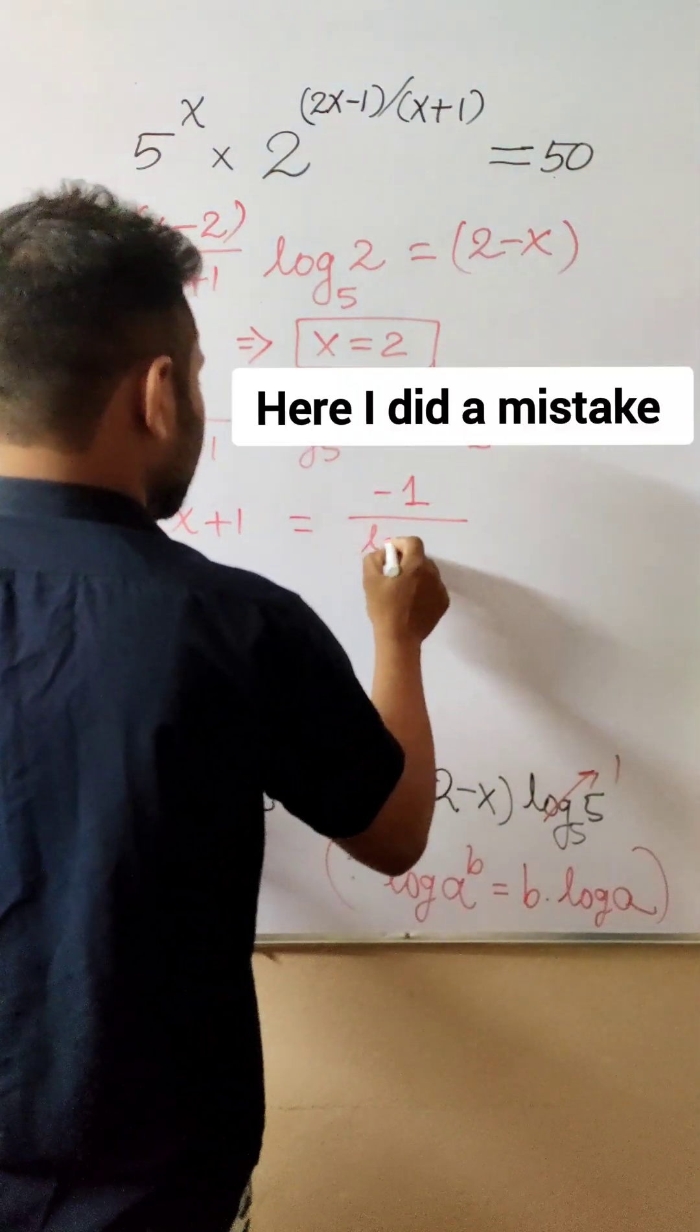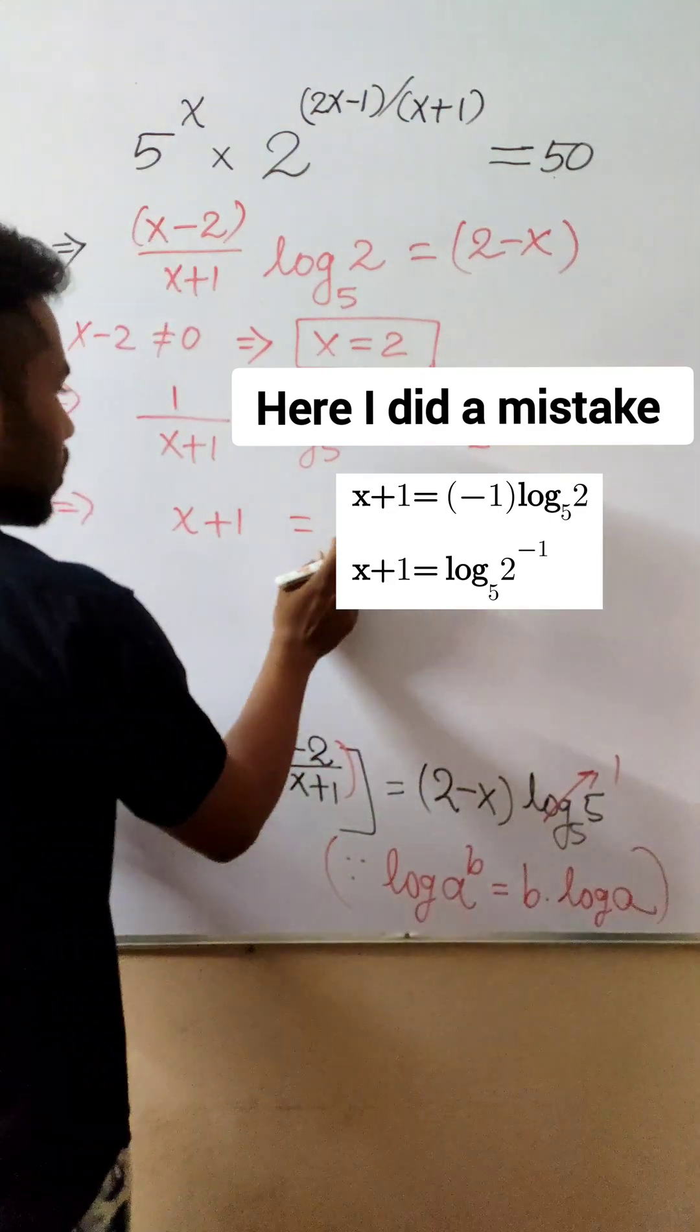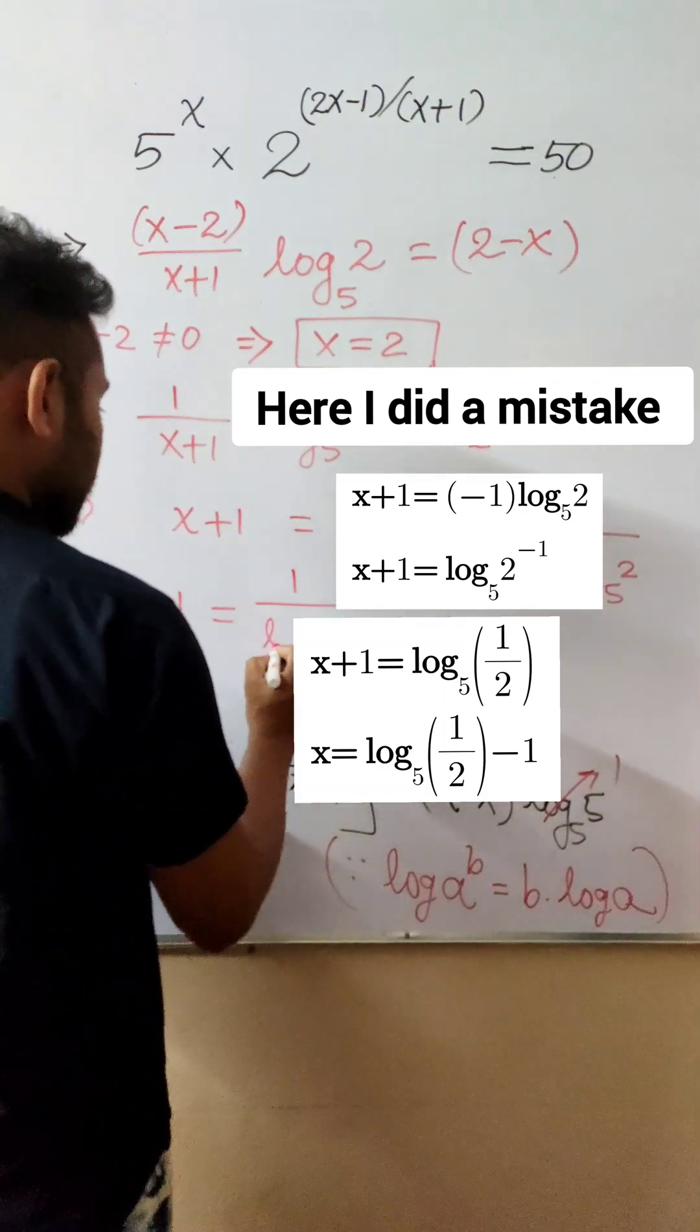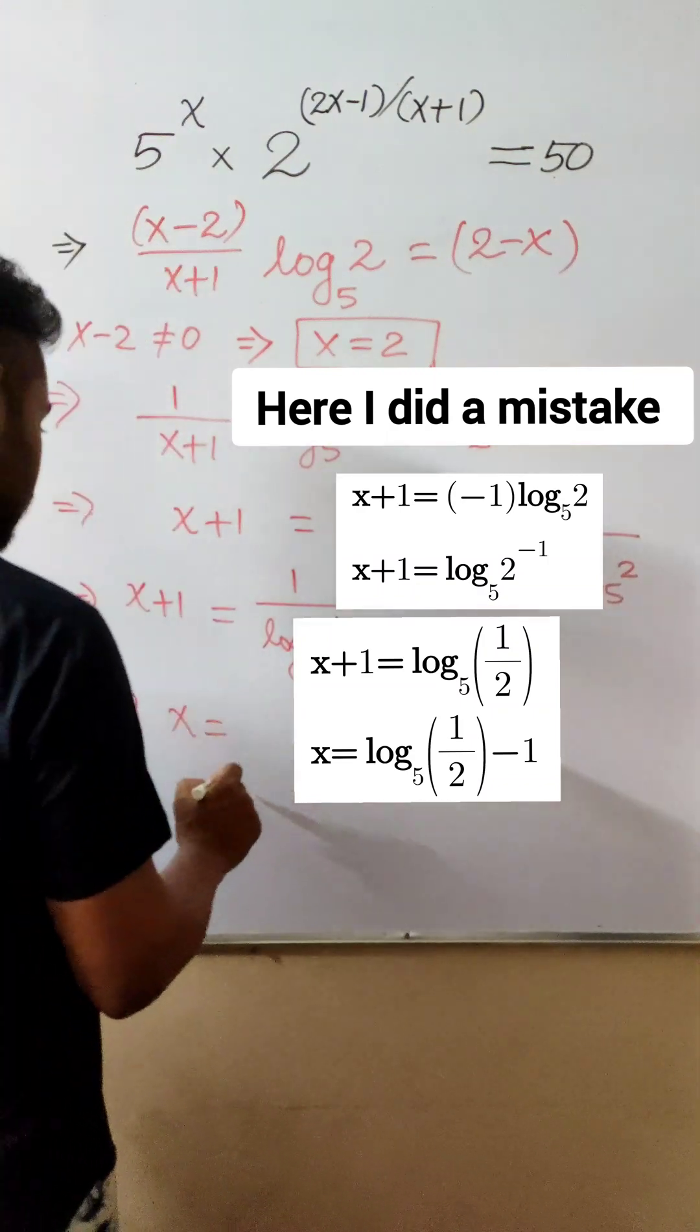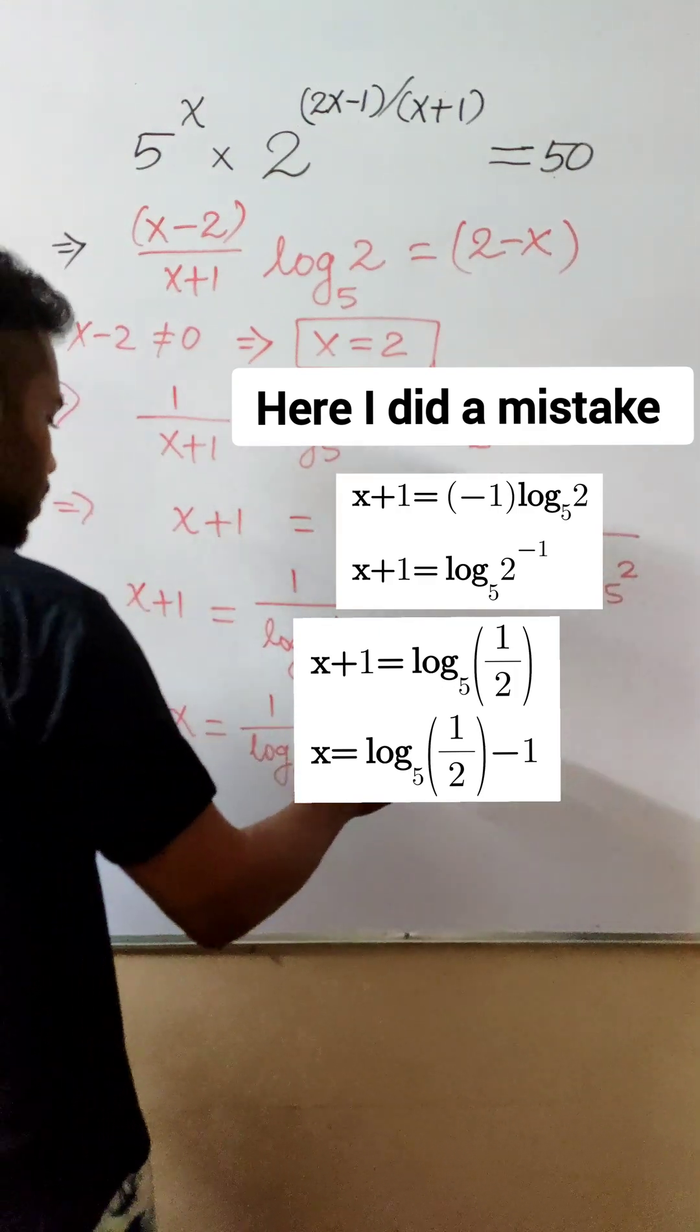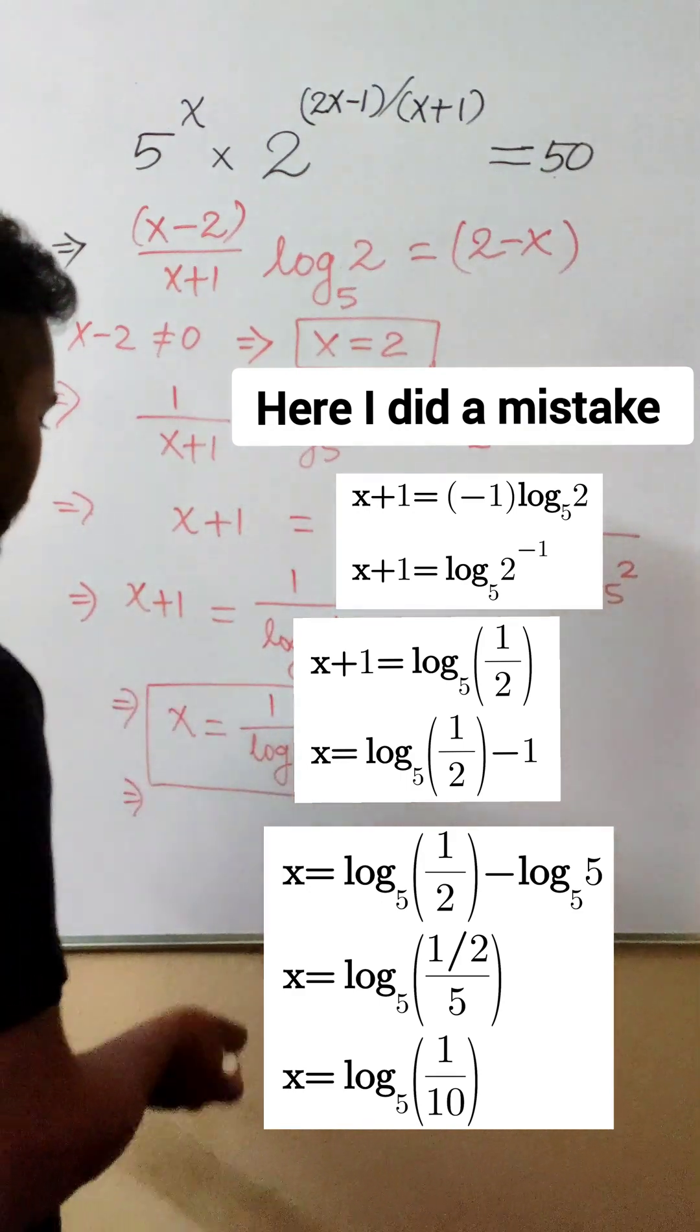1/(-1 times log₅(2)), which I can write as log₅(1/2). Therefore, x equals 1/log₅(1/2) minus 1. You can simplify this even more, but I don't have space and the video is getting very lengthy, so I'm stopping here.